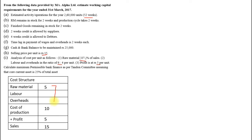Raw material plus labor plus overhead has to total 10. Raw material is already 5, so the remaining labor and overheads together must be 5. The ratio given is 6:4, so divide 5 in the ratio 6:4 — you get labor as 3 rupees and overhead as 2 rupees. This is the first working note.